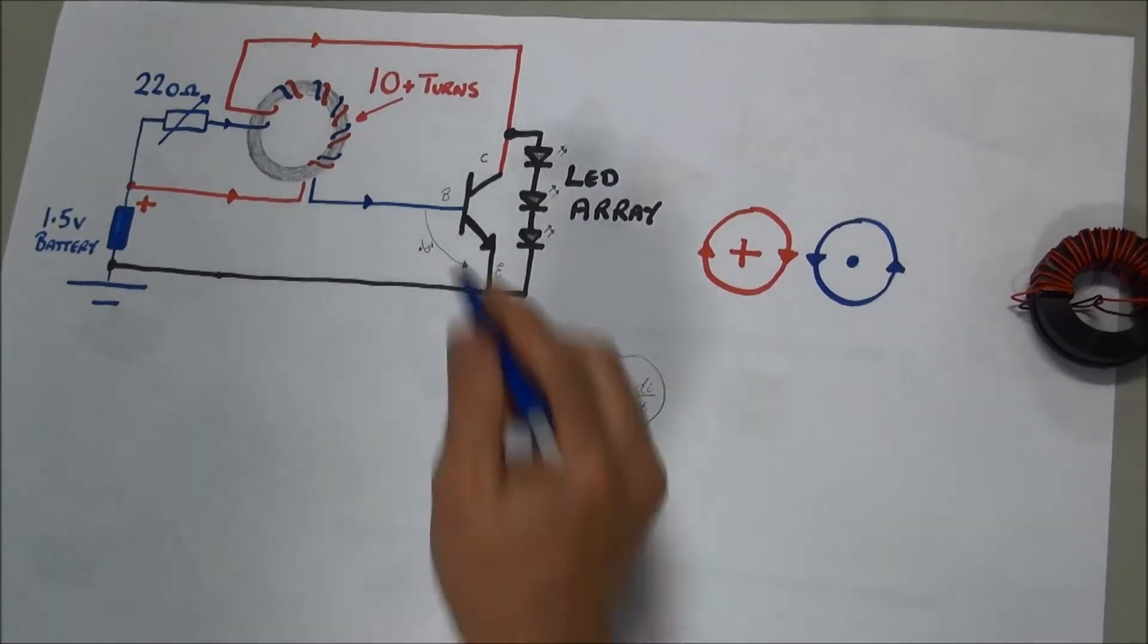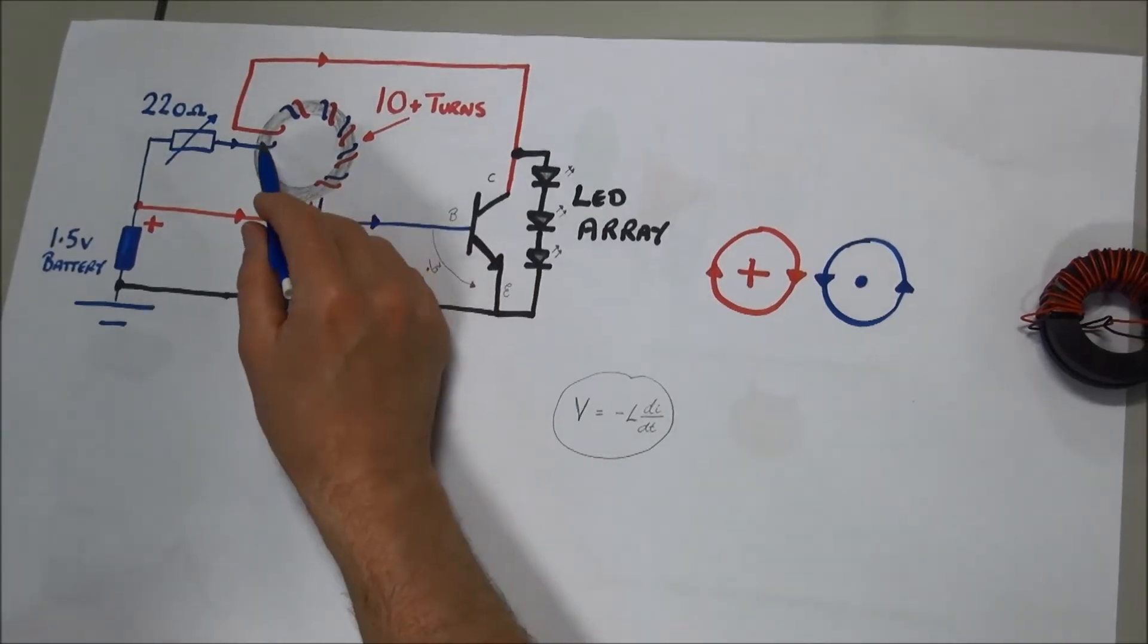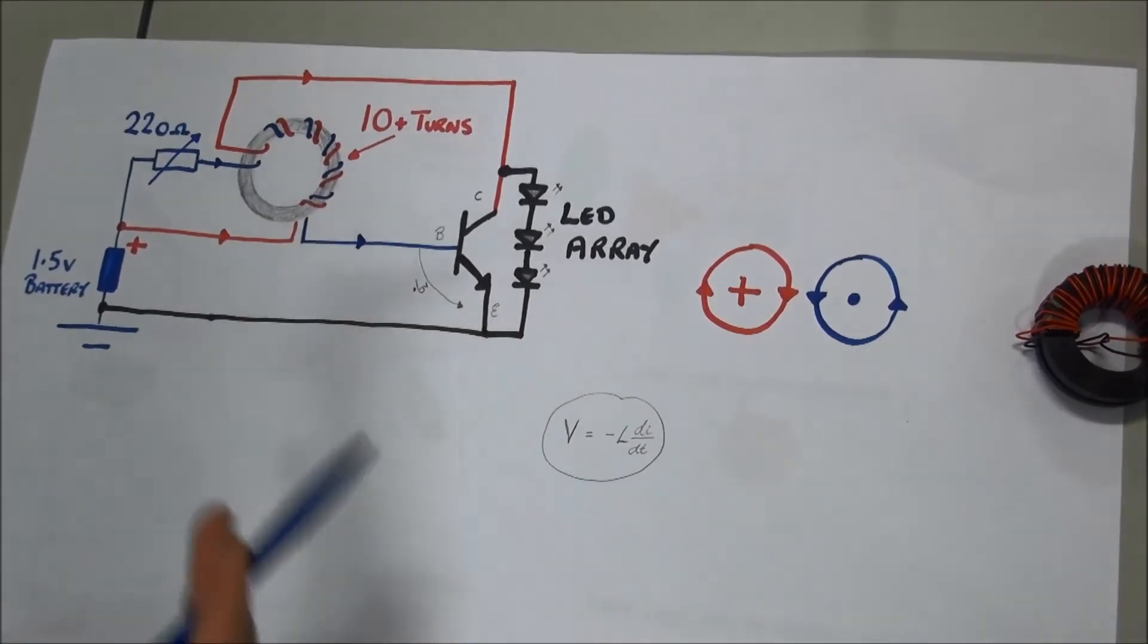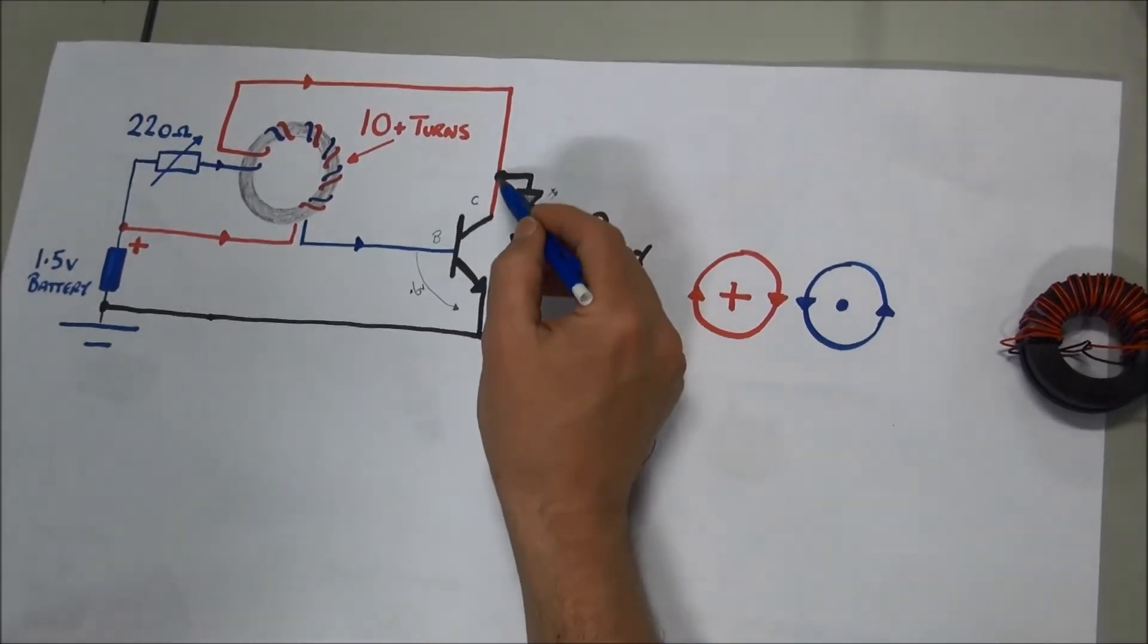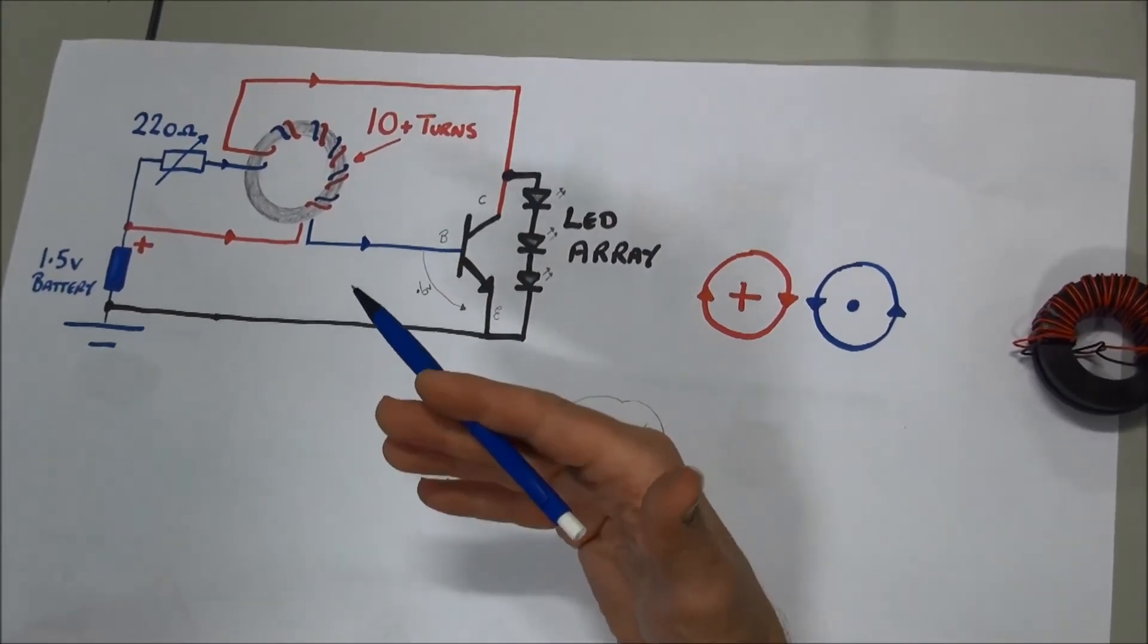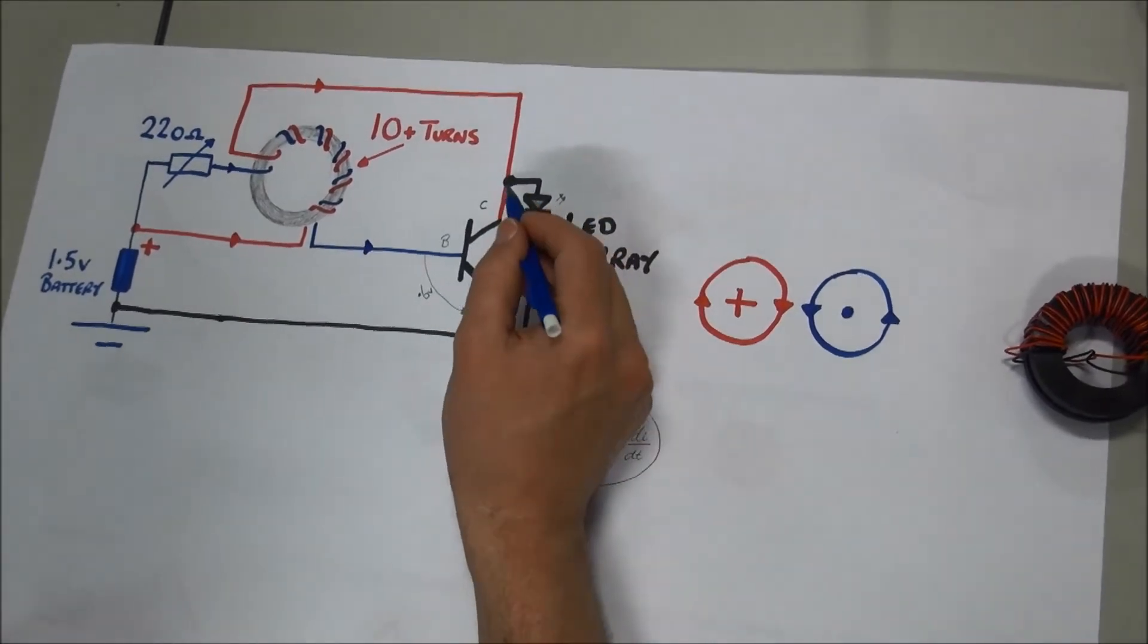However, the induced voltage depends upon the changing current. As soon as the transistor reaches saturation and switches on fully, that changing current is no longer there and the transistor switches off very, very rapidly.